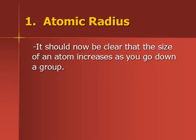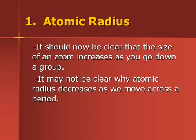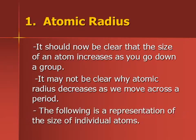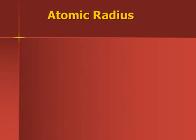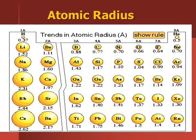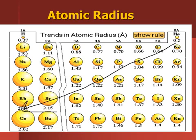So for atomic radius, as you go down a group atoms tend to get bigger, while as we go across a period the atoms are actually going to be getting smaller in size. I've got a picture here to put this into perspective — a periodic table with radiuses listed in angstroms. It's pretty clear that our biggest atoms are generally found in the lower left area.